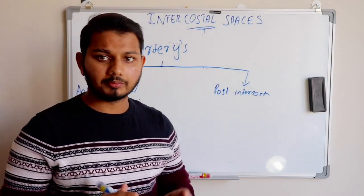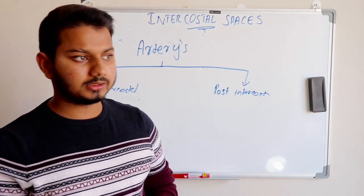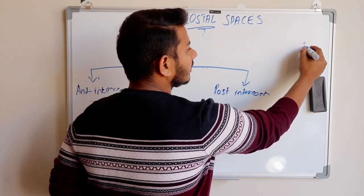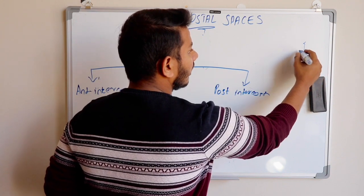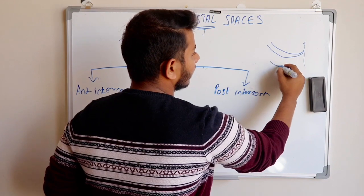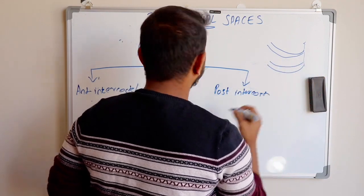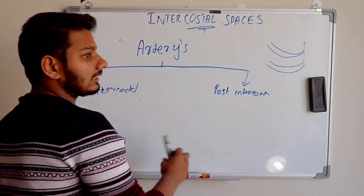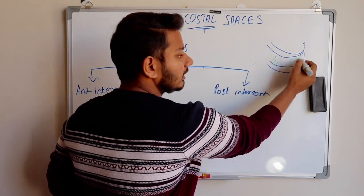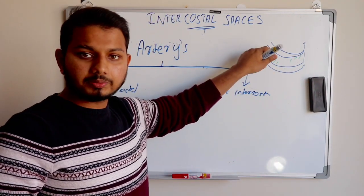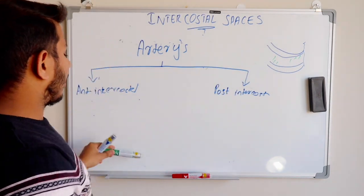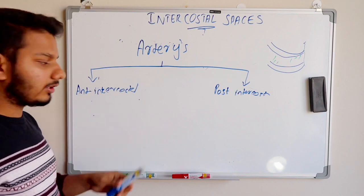The intercostal space is the space between two ribs. If you take two ribs — consider one as the first rib and the other as the second rib — the space between them is known as the intercostal space.